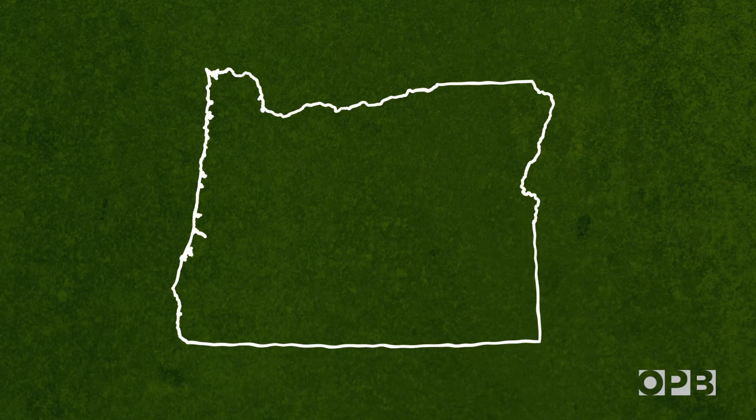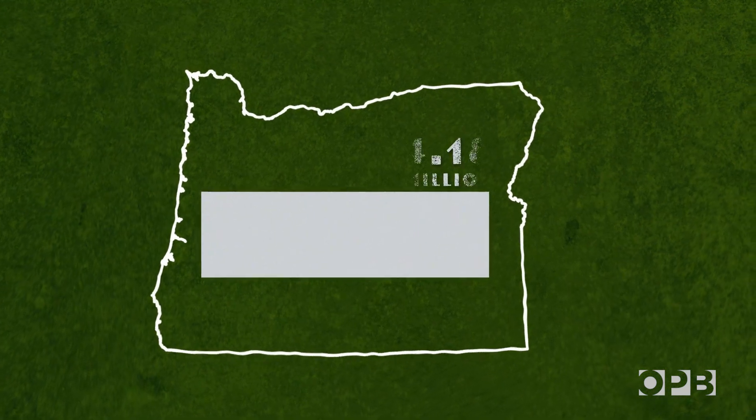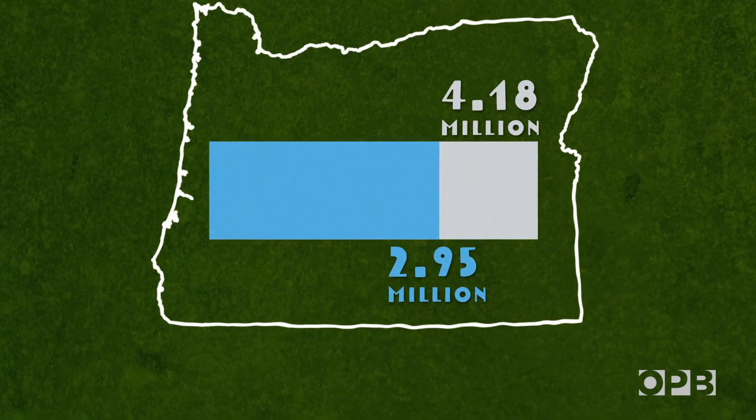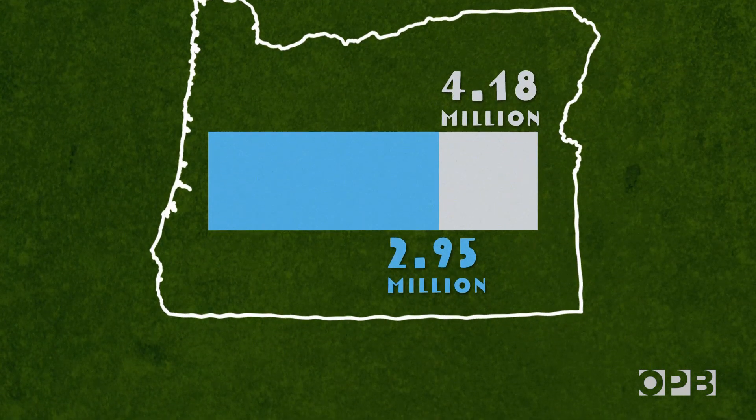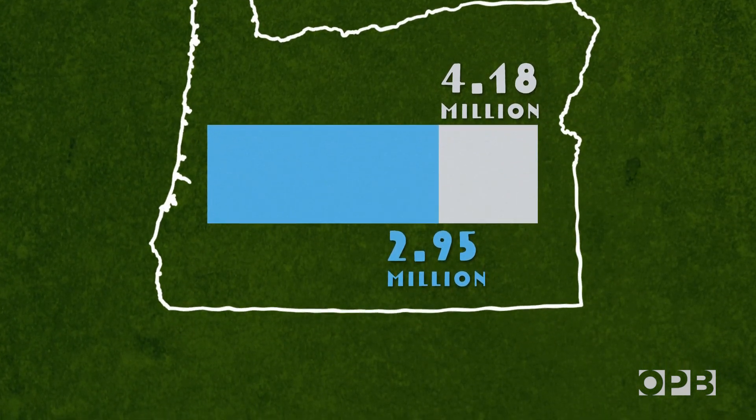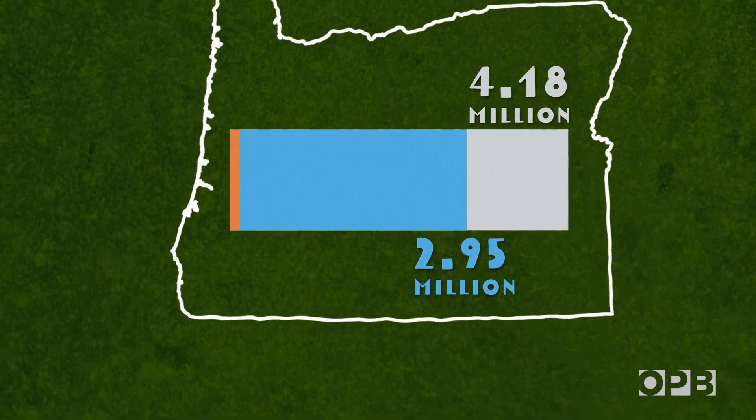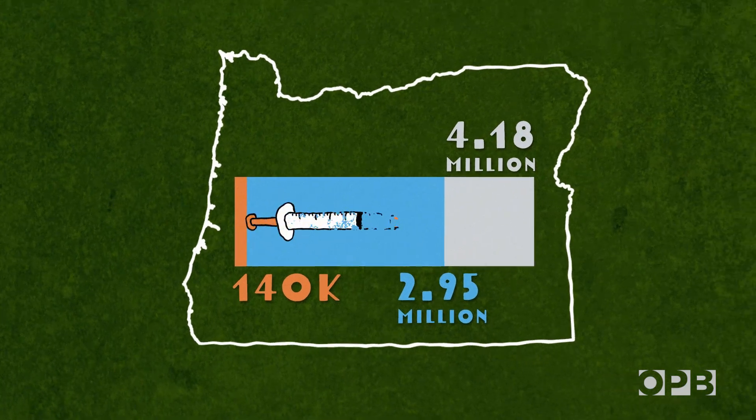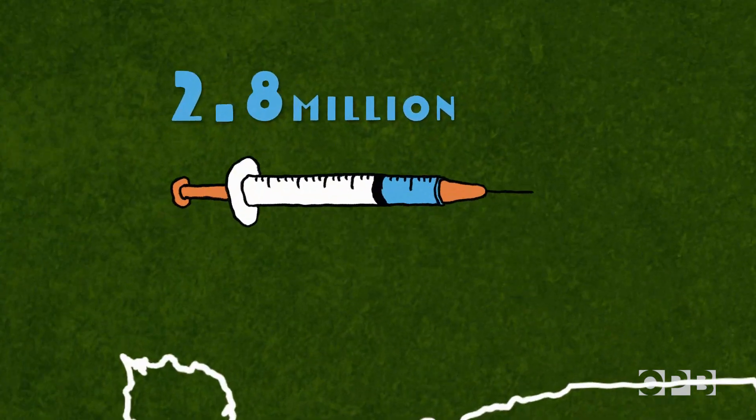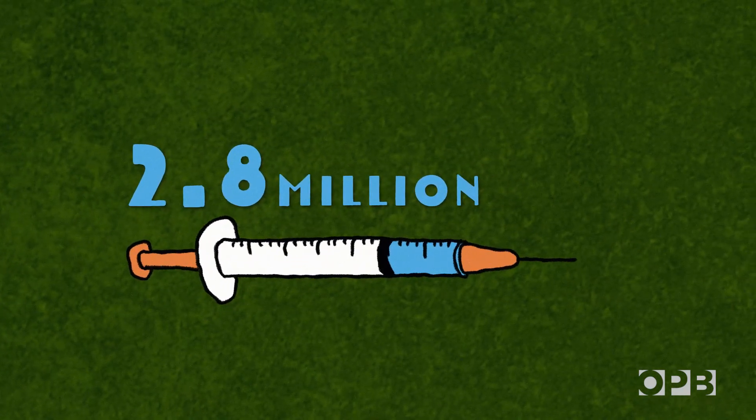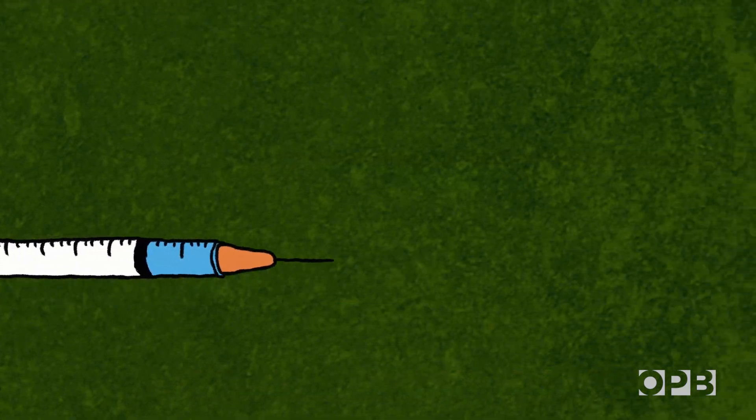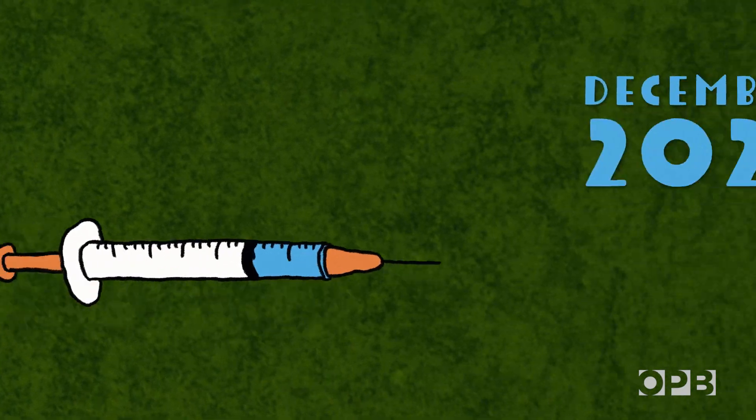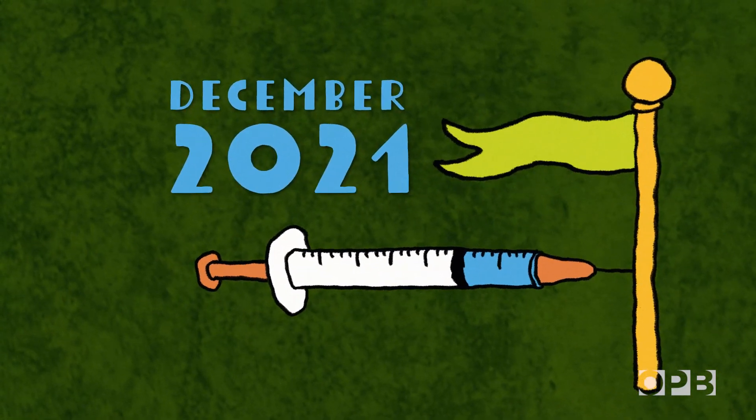Take Oregon, for example. With a population topping 4 million, the state would need to have a little less than 3 million people immune to COVID-19 to reach herd immunity. At the end of January 2021, there was about 140,000 confirmed coronavirus infections. That sets our vaccine goal to around 2.8 million people to hit that 70%. At the state's average late January vaccine rate of 16,000 doses per day, we'll get there by December 2021.